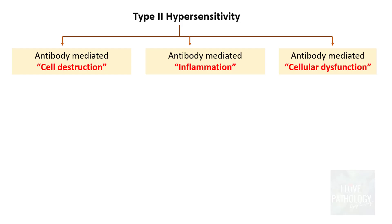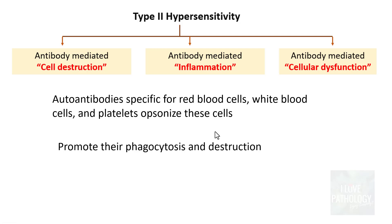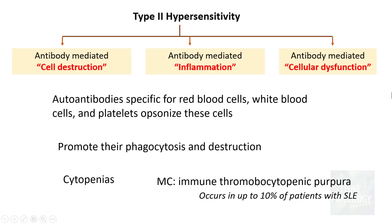Though type 3 hypersensitivity is the most common mechanism of tissue injury, the second most common is type 2 hypersensitivity — antibody-mediated tissue injury — not by formation of immune complexes but by direct injury by antibodies. Autoantibodies specific for red blood cells, white blood cells, and platelets opsonize these cells, promoting their phagocytosis and destruction, leading to various cytopenias. The most common cytopenia is immune thrombocytopenic purpura, occurring in up to 10% of SLE patients.